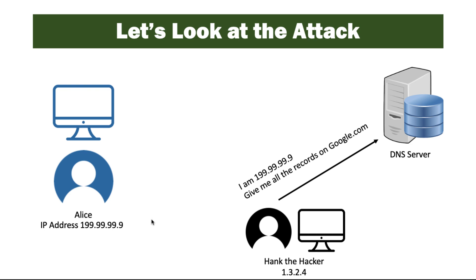In this attack, Hank has found a website, google.com, that has a lot of entries in its DNS records. That means a lot of records that are mail records like MX records, or A records, or just text records, or CNAME records. Just a lot of different information is available for google.com.